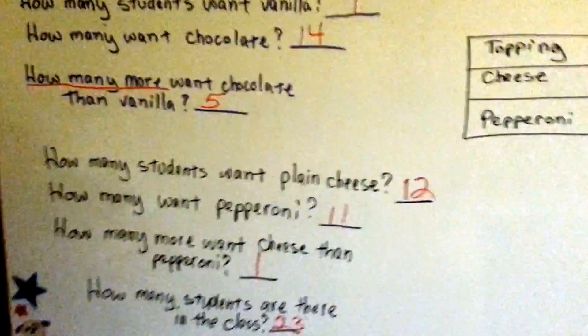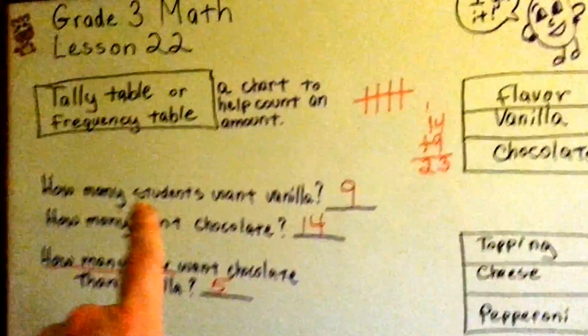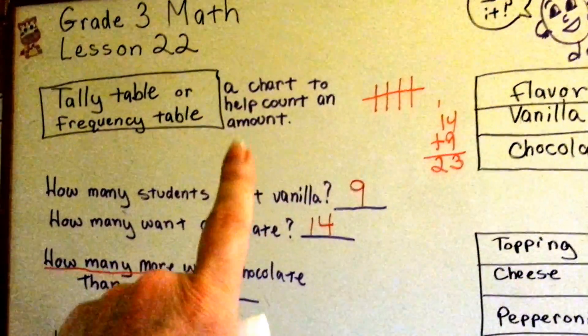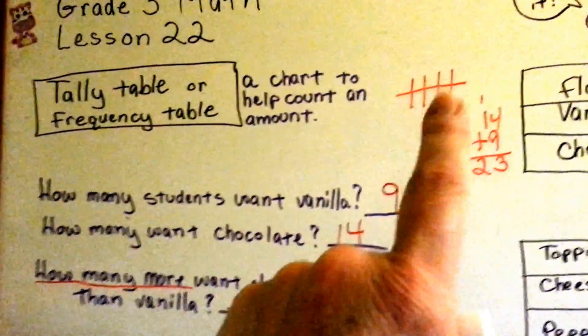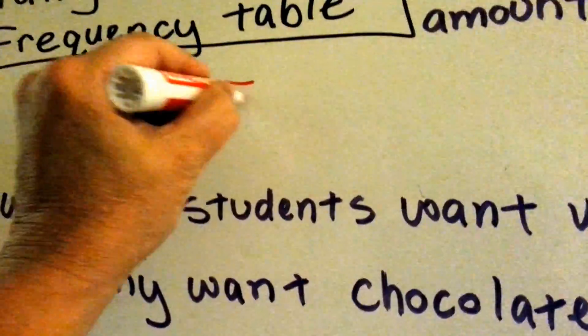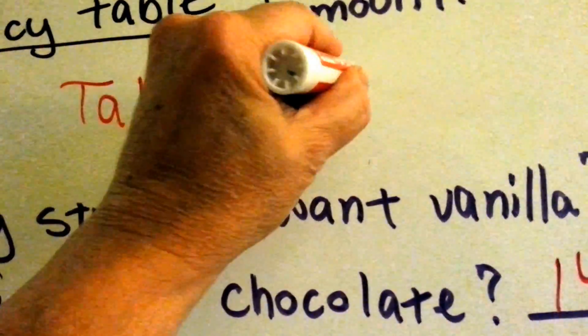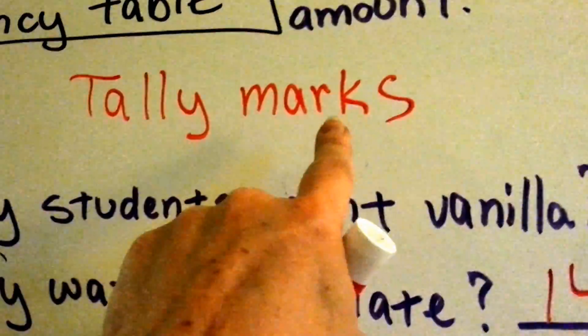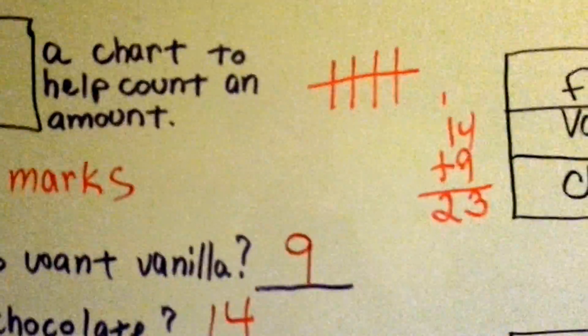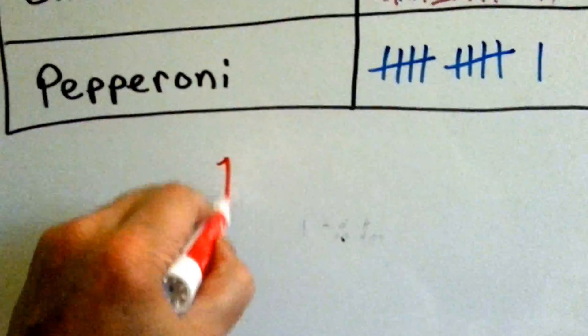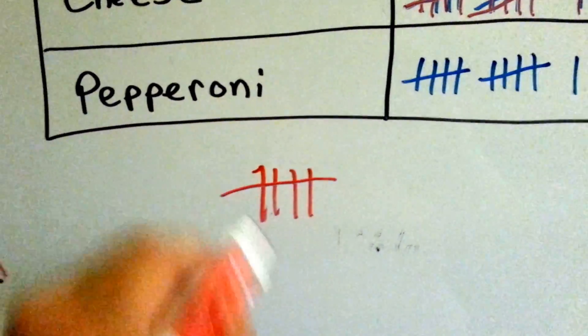So next time you're doing something where you need to count, and there's a lot of them, you can use tally marks. Tally marks. They're little ones, little slashes like this, and when you get to 5, you cross it.